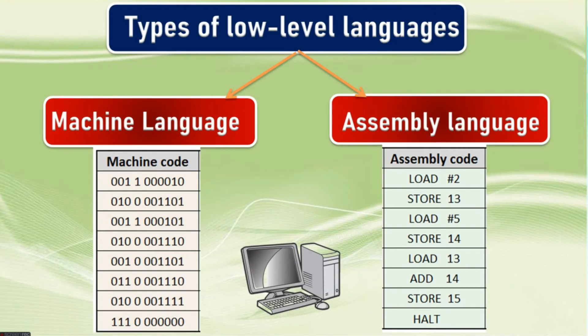There are two types of low-level languages: machine language and assembly language.